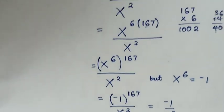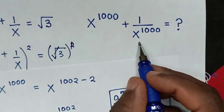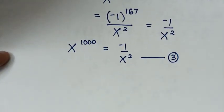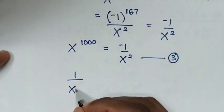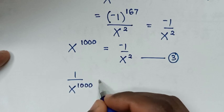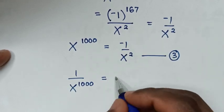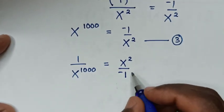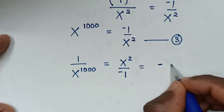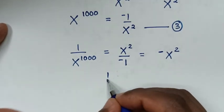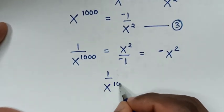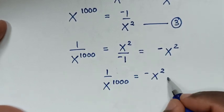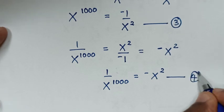Then in the next step, we'll find the value of 1 over x to the power of 1000. So from 1 over x to the power of 1000, it will be x squared over negative 1, which equals negative x squared. Therefore, 1 over x to the power of 1000 equals negative x squared. We'll call this equation 4.